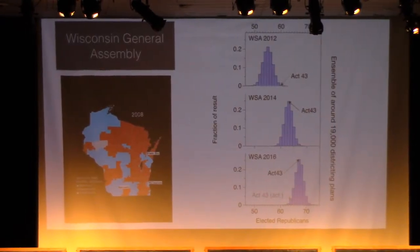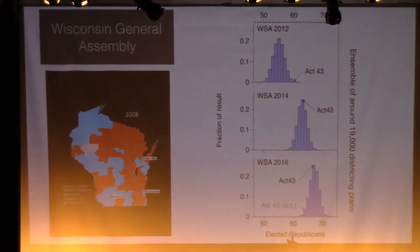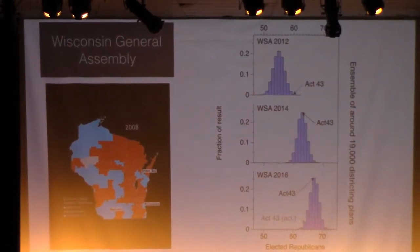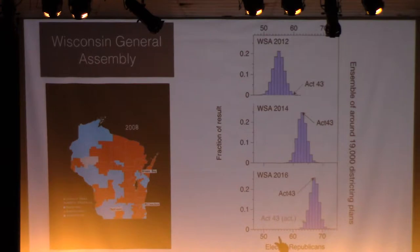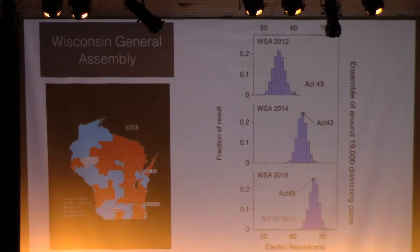So this is the signature of gerrymandering. Here's Wisconsin. Here's the Act 2043 map — the maps used in the General Assembly elections. We're switching to the state legislature in Wisconsin. This is Gill versus Whitford, the main Supreme Court case. Here are three elections: 2016, 2014, 2012. Two out of three elections, it hits straight on the nose. The other one does a particularly bad job — the top one. But two out of three are straight on the nose.